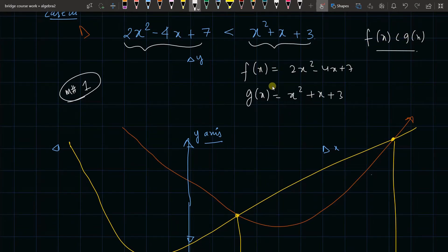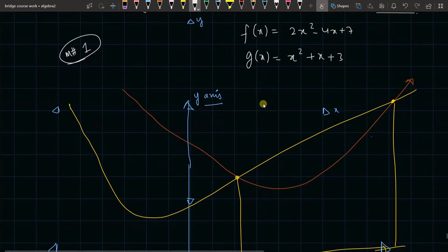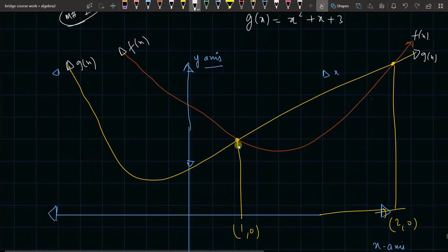So when I plot f(x) and g(x) on the graph, we see these are the possibilities we are getting. We're clearly seeing this is our f(x)—the brown graph is our f(x), and our g(x) is somewhat here. And I can see that this is the point of intersection somewhere here at 1, it is intersecting, and at 2, x equal to 2, it is intersecting.